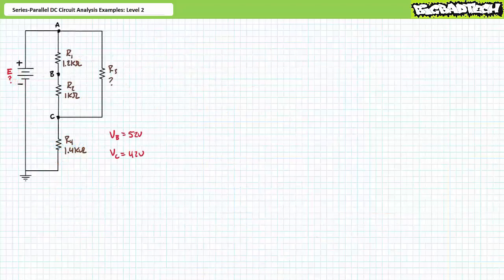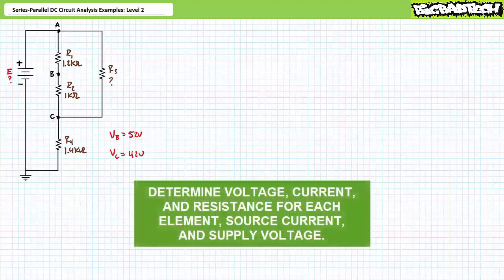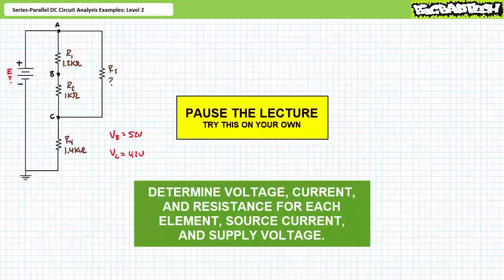Our next illustrated example features a voltage source of unknown magnitude in a series parallel relationship with four elements. R1 is 1.2 kilo ohms, R2 is 1 kilo ohm, R3 is an unknown resistor, and R4 is 1.4 kilo ohms. The only additional information consists of single subscript notation voltages with reference to ground: VB is 52 volts and VC is 42 volts. We're being asked to solve for the voltage drop across each element, the current through each element, the source current, unknown resistance R3, and the voltage source magnitude. Pause the lecture and try this on your own. If you're tracking, you should have obtained the following results.